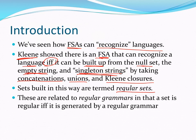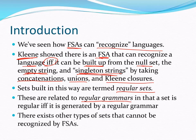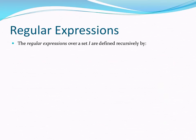We'll see how these pull together to create languages recognized by FSAs. If we can build a set using these techniques, it's called a regular set, and these are related to regular grammars — type 3 grammars from Section 13.1. A set is regular if and only if it is generated by a regular grammar. Regular expressions are just ways to build up regular sets, and their structure allows us to do proofs. They're defined recursively with three basis cases.